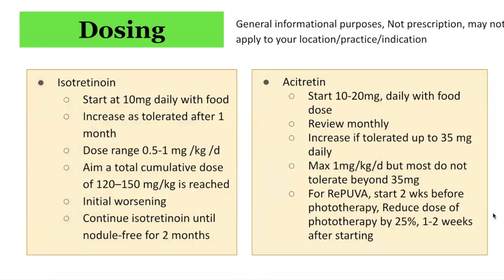In terms of dosing — this is a general guide assessed on a case-by-case basis — isotretinoin can be started at a low dose, for example 10 milligrams daily with food, increased as tolerated after one month. The target dose range is 0.5 to 1 milligram per kilogram per day. Some use a total weight-based dose of 120 to 150 milligrams per kilogram; others stop isotretinoin once a nodule-free period of two months is achieved. It's important to warn patients of a potential initial worsening period, and in some challenging cases this may require concurrently starting isotretinoin with oral prednisone to reduce the impact of the initial flare.